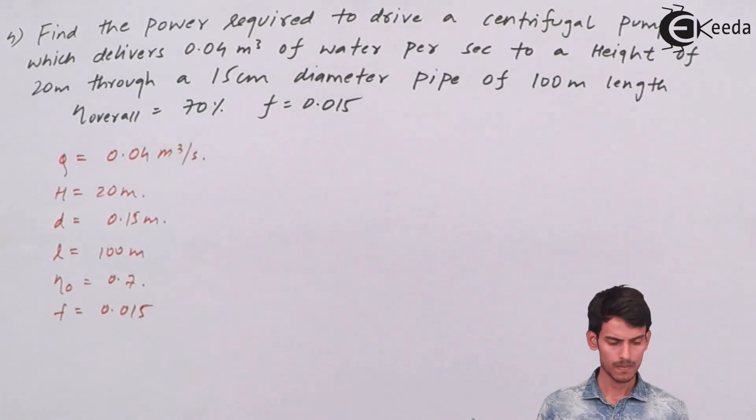I have written all the given data. The diameter of the pipe through which the delivery is happening is given, the length of the pipe is given, the overall efficiency is given, the friction factor is given. So first of all, let's calculate the velocity of the flow through the pipe.